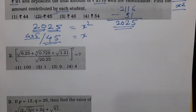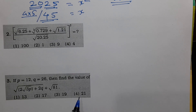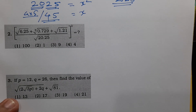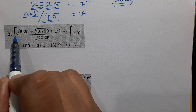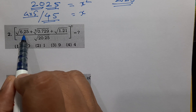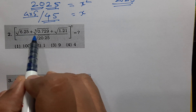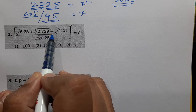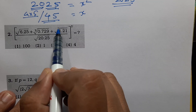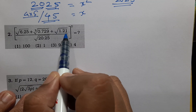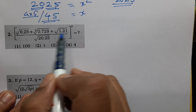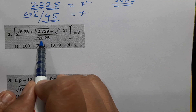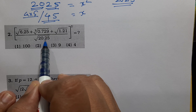Question 2: Evaluate the expression: square root of 6.25 plus cube root of 0.729 plus square root of 1.21, all divided by square root of 20.25, with the entire result squared.